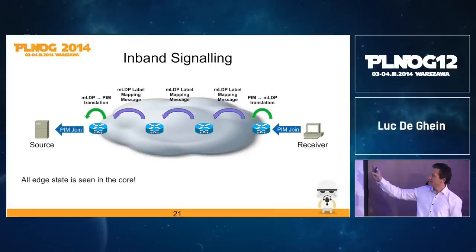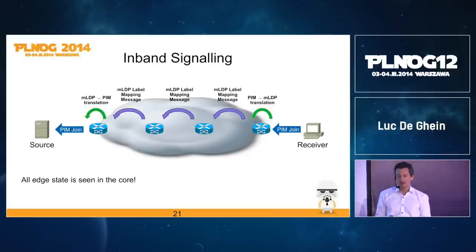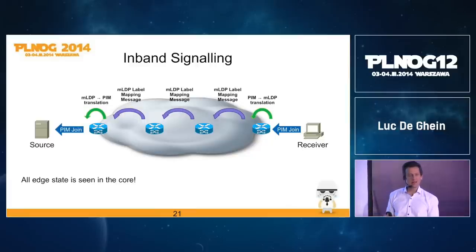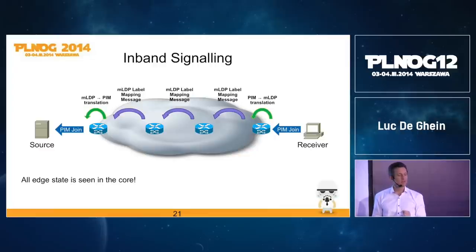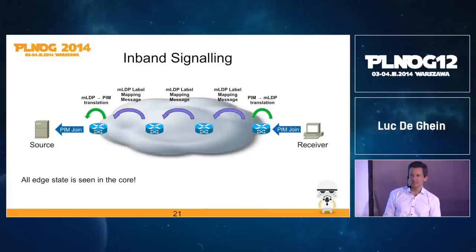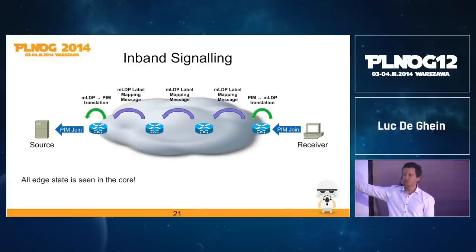In-band signaling means that when the egress PE receives a PIM join from the CE, it translates it into an MLDP label mapping message, which is transported hop-by-hop towards the ingress PE and then translated back into a PIM join sent towards the source or rendezvous point. The downside is that each piece of state at the edge is translated into state in the core, so this is probably not the most scalable model.